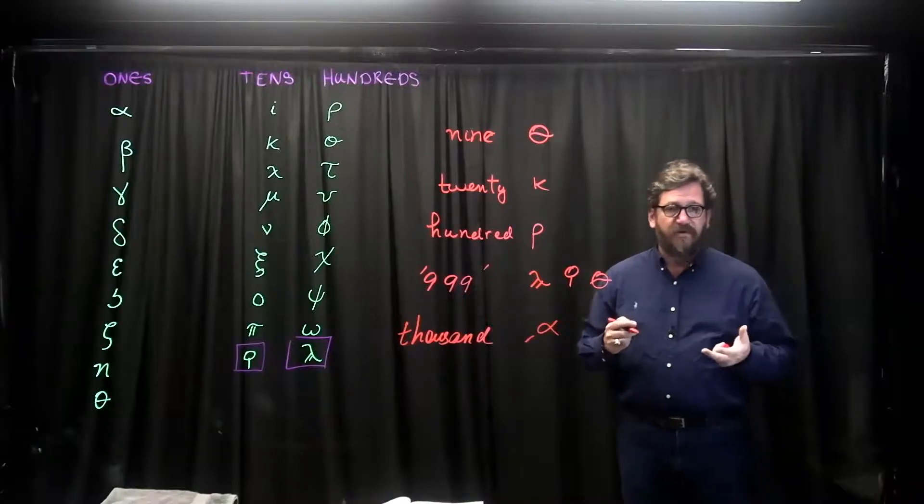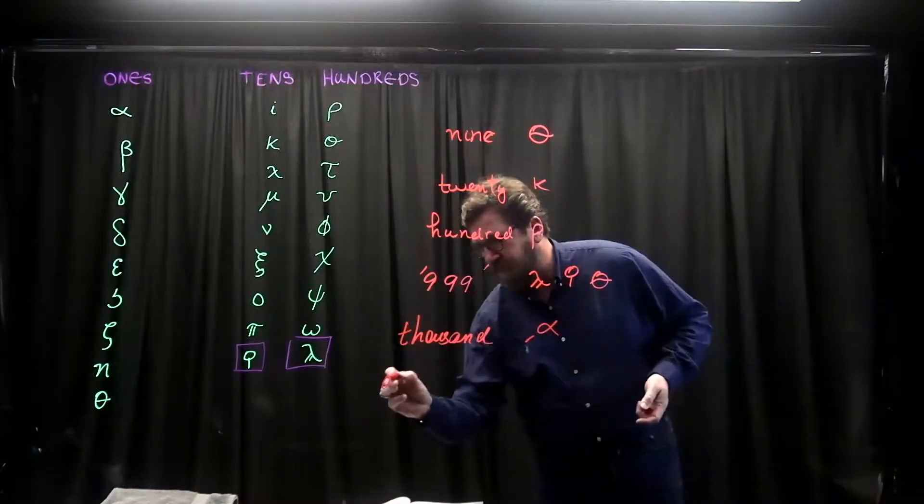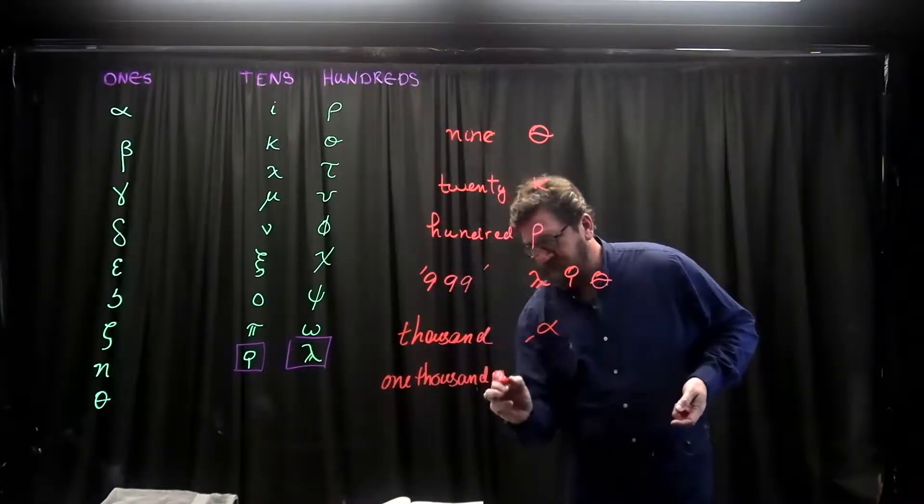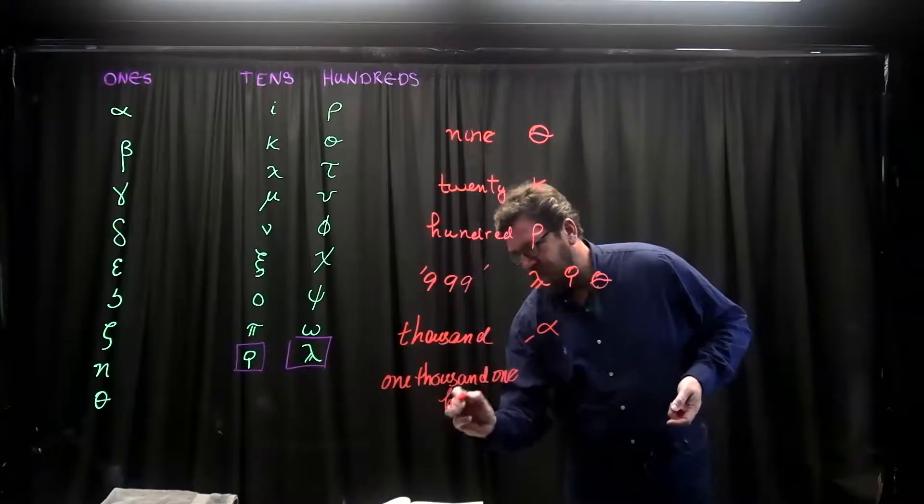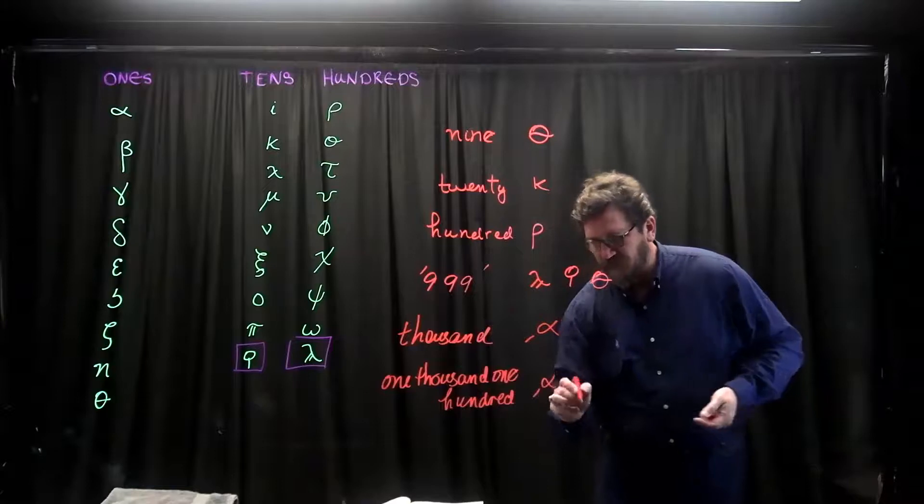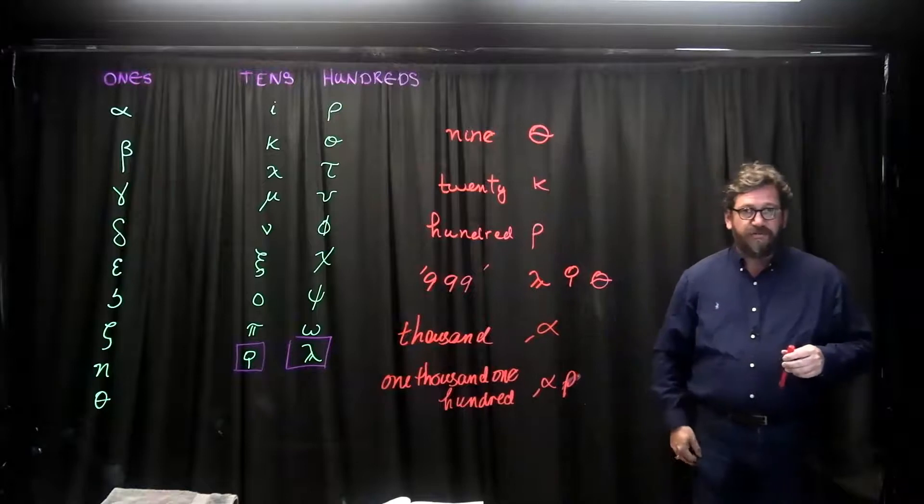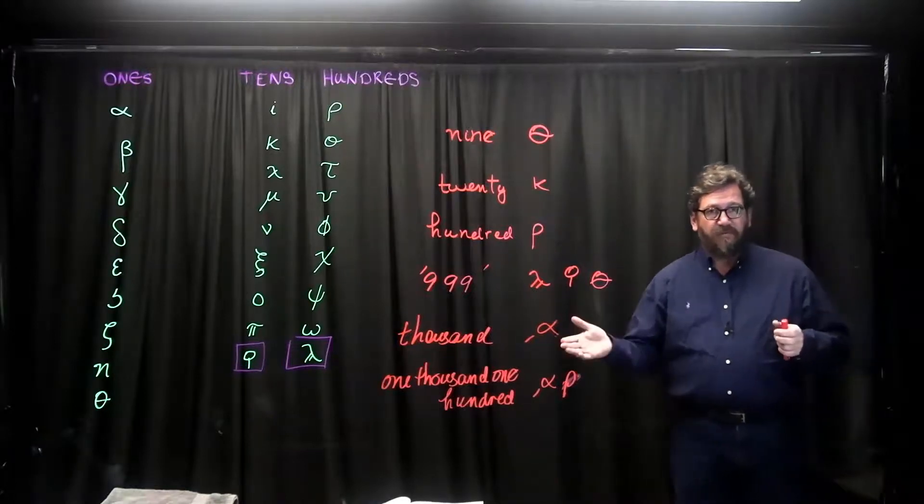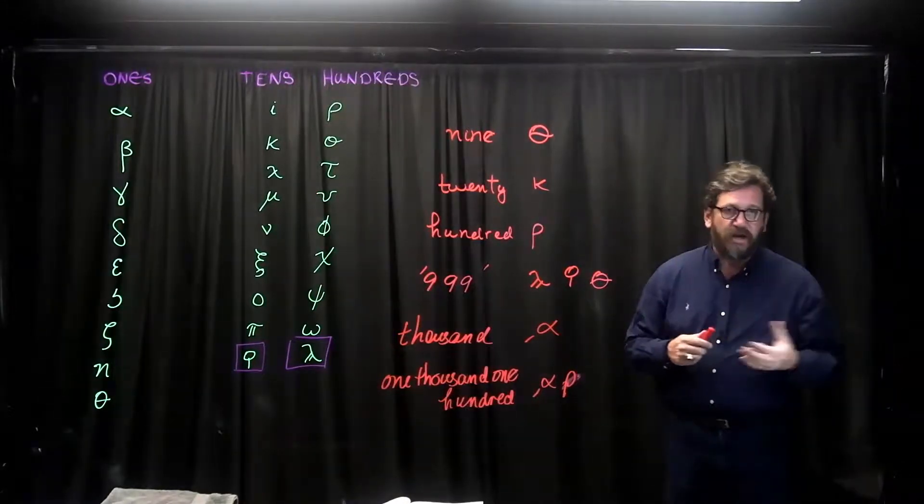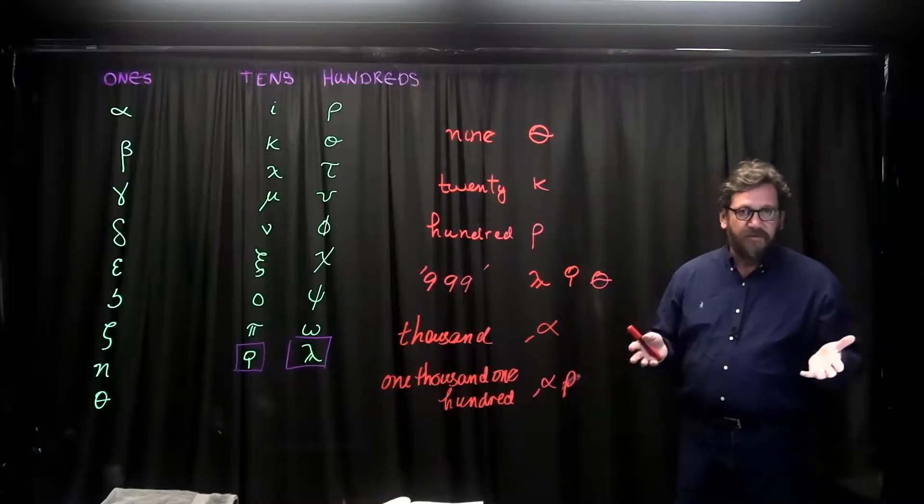So if you want to represent 1100, there's 1100. Alpha, with the symbol meaning multiplied by 1000, followed by rho, because it is the symbol for 100. And in this way, the Greeks were able to do a lot of arithmetic.